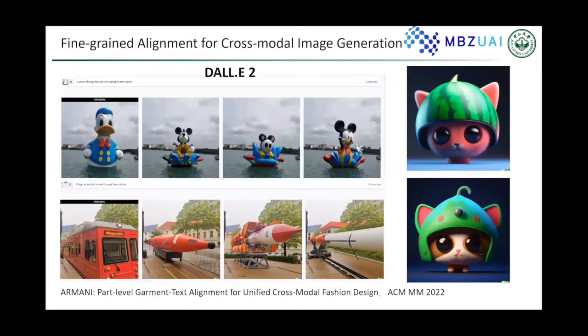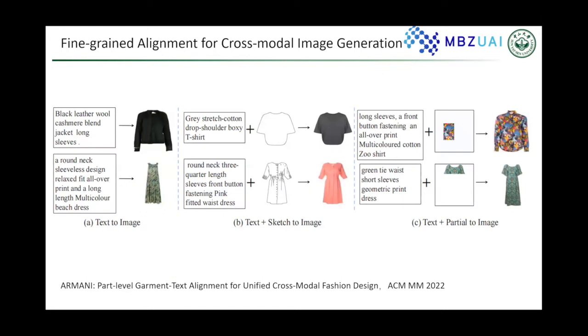We also use our fine-grained cross-modal pre-training model for image generation. Diffusion models are very popular in generating high-quality natural images, but it's hard to add fine details. We propose a unified cross-modal fashion designer with new patch-level, phrase-level, and gamma-level alignment. It can handle text-to-image, text-to-scan, sketch-to-image, and also text-image-part-to-image generation.